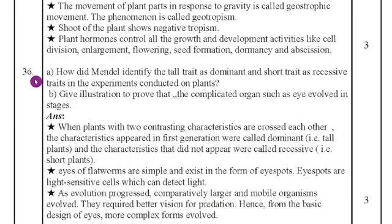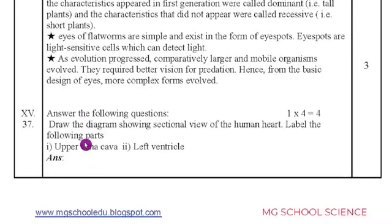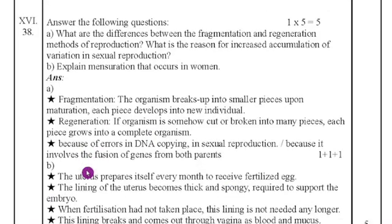36th question. Question number 36. First question. How did Mendel identify the tall traits as the dominant and the short traits as the recessive traits in the experiment conducted on the plants? B question. Give illustration to prove that the complicated organs such as eye evolved in stages. For that also I give an answer just to copy. You know very well heart diagram. I have not given the heart diagram.